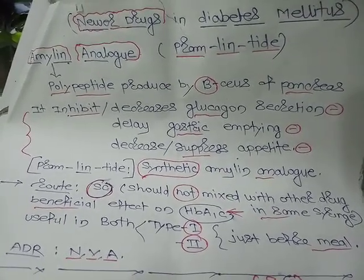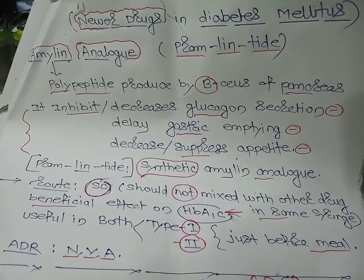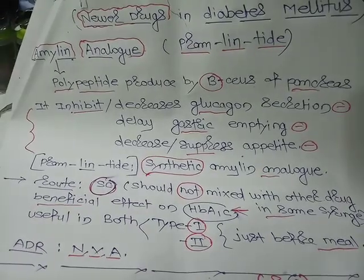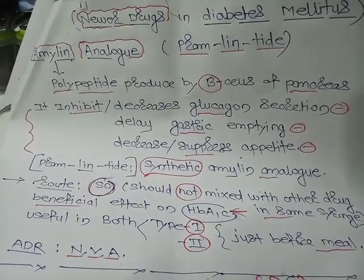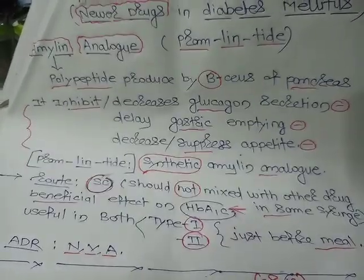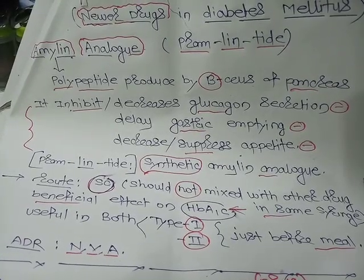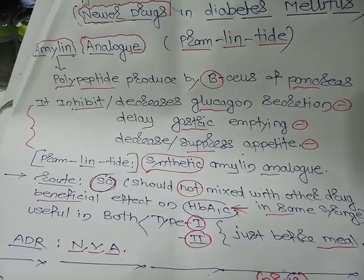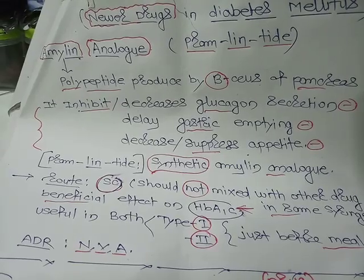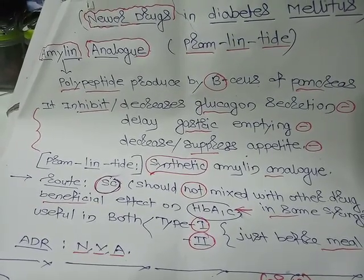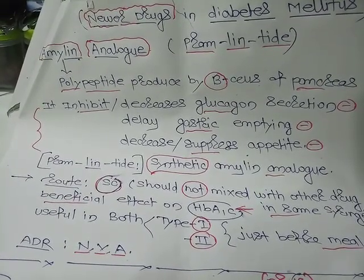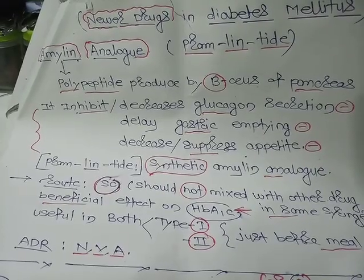Today we are going to discuss the newer drugs in diabetes mellitus. First, we will discuss the amylin analog. The name of the drug is pramlintide, which is the synthetic amylin analog. Amylin is a polypeptide produced by the beta cells of the pancreas.